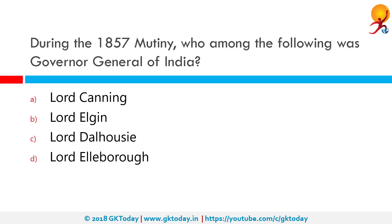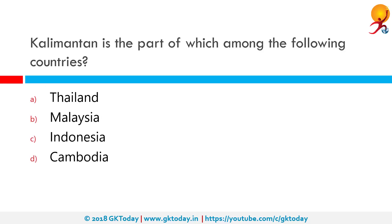During the 1857 mutiny, who among the following was the Governor General of India? Lord Canning was the Governor General at the time. He served as Governor General of India between 1856 and 1862. During his tenure, the Government of India Act 1858 was passed, which created the office of Viceroy to be held by the same person who was the Governor General. Thus, Lord Canning also became the first Viceroy of India.